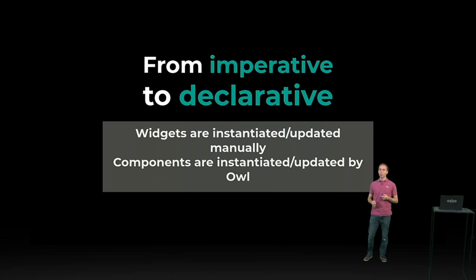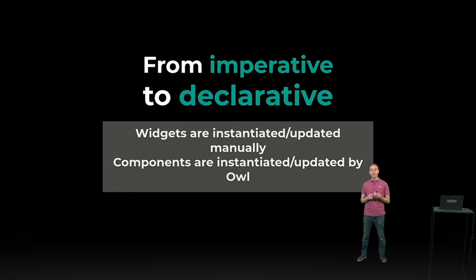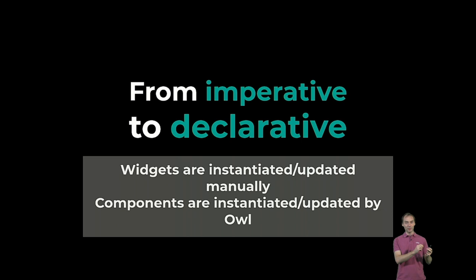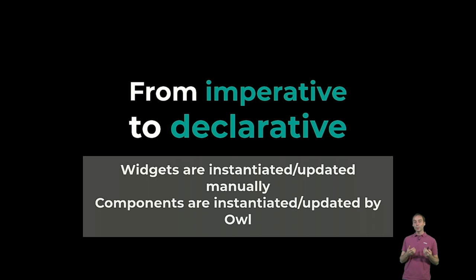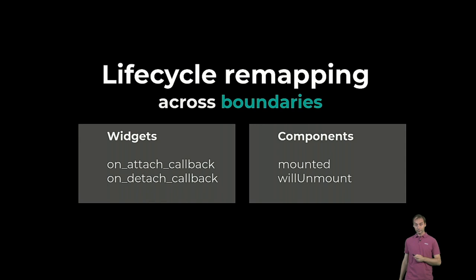Another challenge — kind of abstract but really significant — is the shift from the imperative paradigm to a declarative way of programming. When you work with widgets, you create them yourself, coordinate them yourself, update them yourself. With OWL components, they are instantiated, updated, and modified by the framework. So when you have a widget inside a component, how do you create it? And when you have a component inside a widget, who should create it? Those are significant issues.